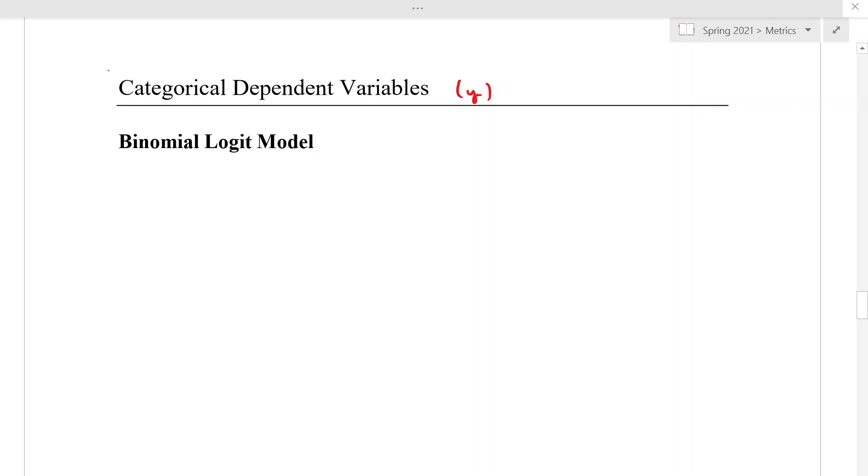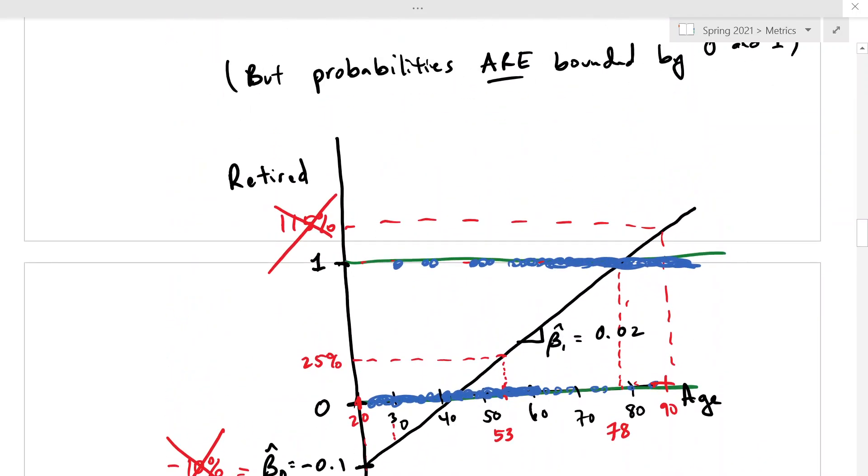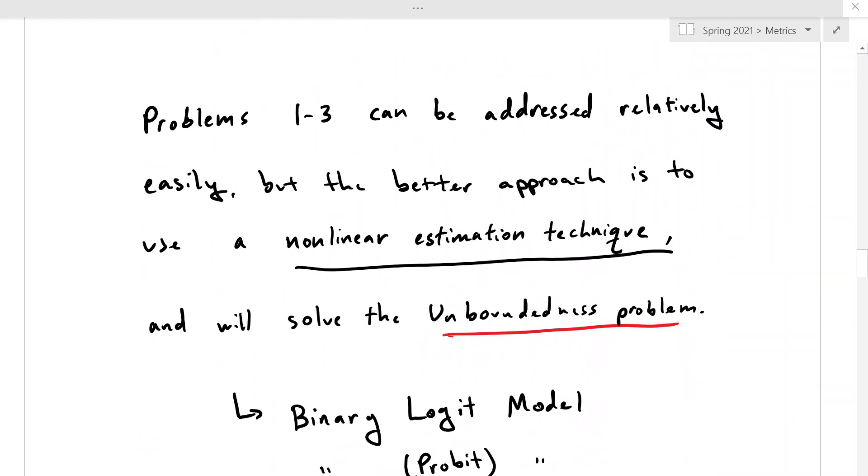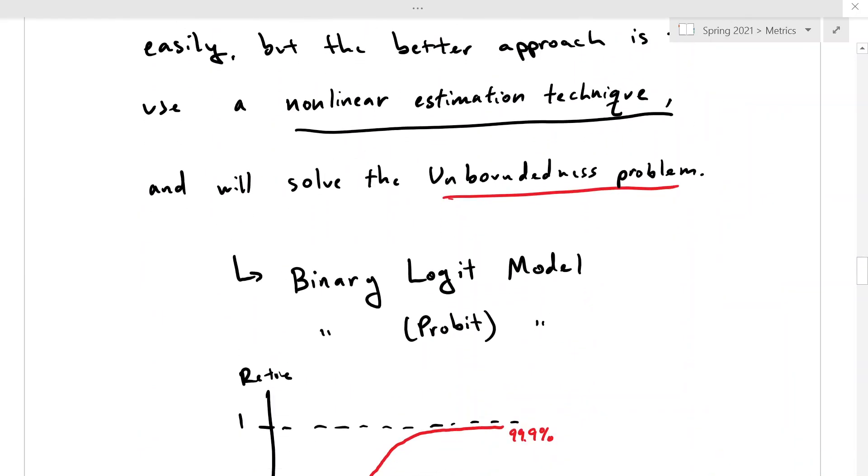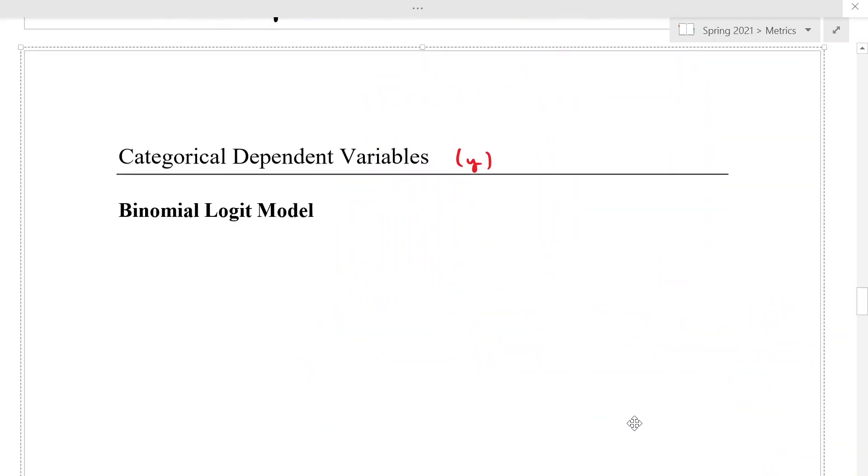So as we mentioned in the last video, we have this problem with linear probability models where it's possible that we could have predicted probabilities outside the range of 0 to 1. So we have this unboundedness problem. So we're going to be solving the unboundedness problem with the logit model or probit model.